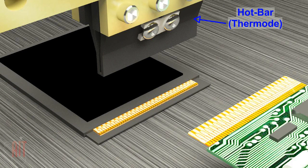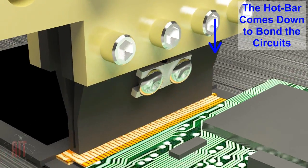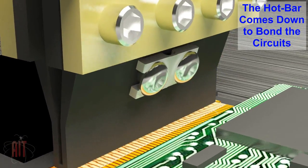Here we see the thermode, or hotbar, and the two components to be joined by soldering. The conductive traces of the two components are properly aligned, and the reflow head moves the thermode down to exert pressure on them.